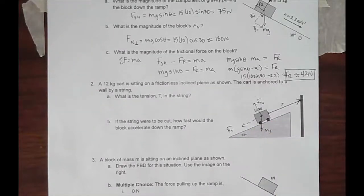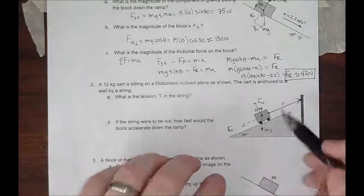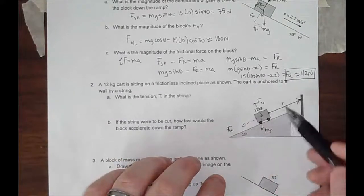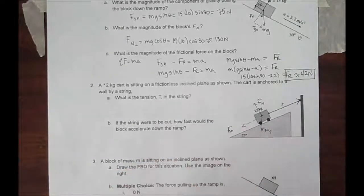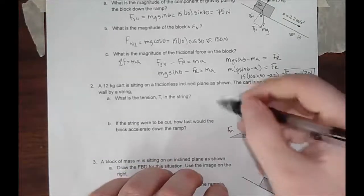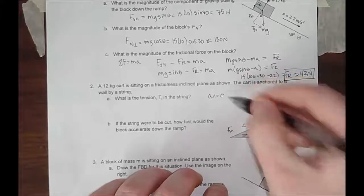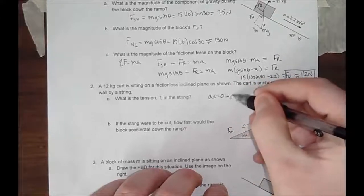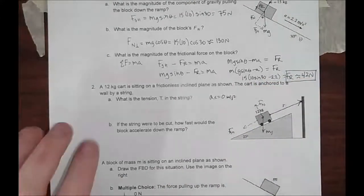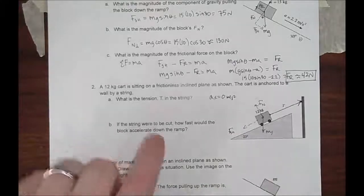Every action has an opposite but yet equal reaction. So if you pull down with FG, this tension will be equal and opposite to that since the system is not accelerating. And that's very key. The acceleration in this system is zero meters per second squared.